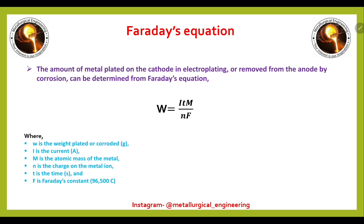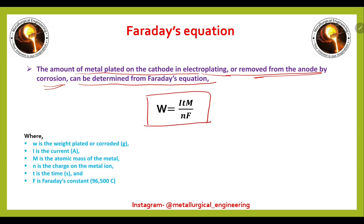About Faraday's equation: the amount of metal plated on the cathode in electroplating, or removed from the anode by corrosion, can be determined from Faraday's equation: W = (I × t × M) / (n × F), where W is the weight plated or corroded (in grams), I is the current (in amperes), M is the atomic mass of the metal, n is the charge on the metallic ion, t is the time (in seconds), and F is the Faraday constant.